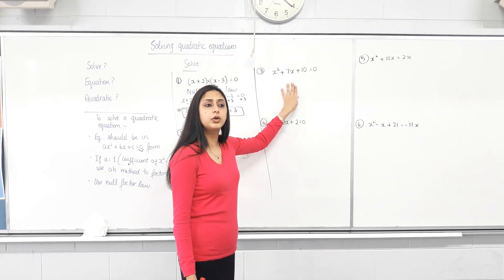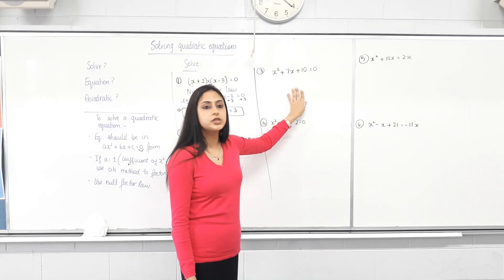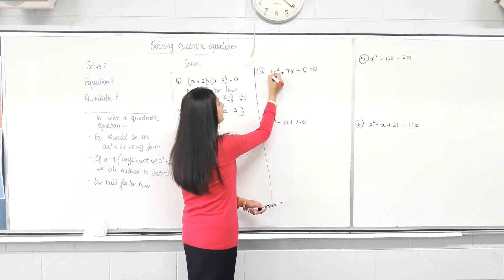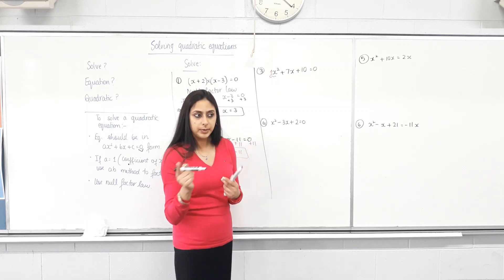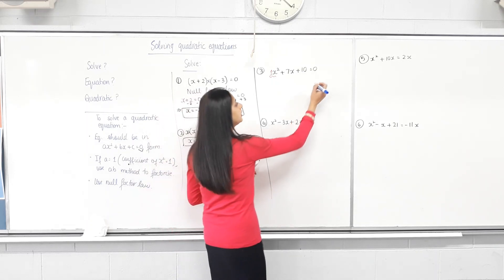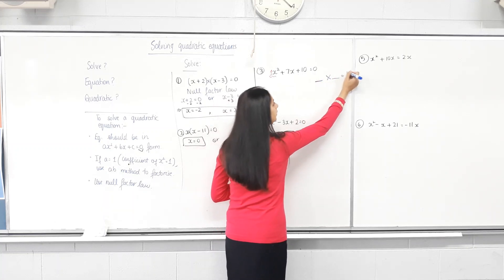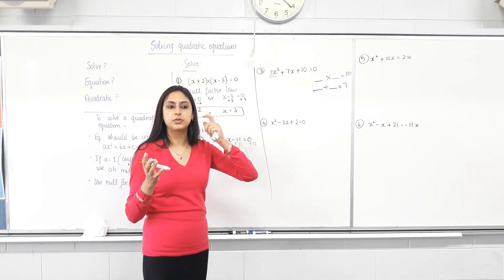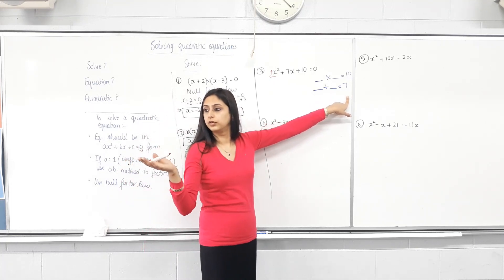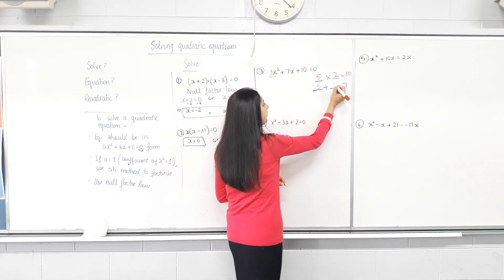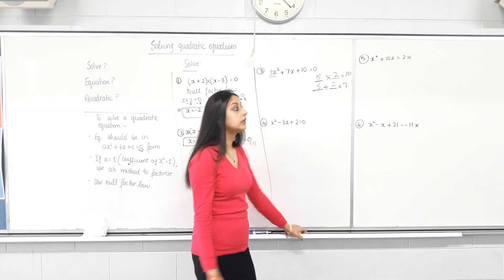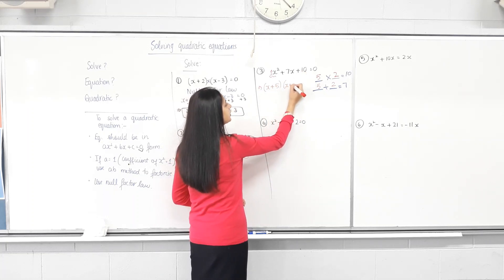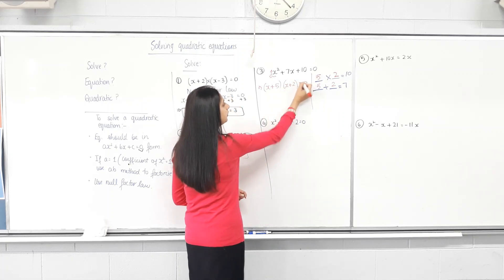Now, first step: is everything on one side and zero on the other? Yes. Is it factorized? No. So look at step 2. Is the coefficient of x squared 1? Yes. So we use the A-B method. Two numbers that times to give you the constant term, and the same two numbers added to give you the middle term. What are the factors of 10? 5 times 2 is 10, and 5 plus 2 is 7. So write this equation as x plus 5 in one bracket times x plus 2 in the other bracket, equals 0. Have you factorized it? Yes.